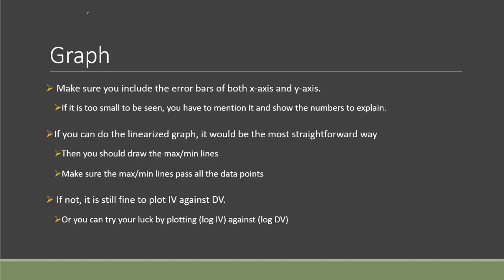The easiest part is actually plotting the graph. You just have to make sure that you must have included the error bar for both x-axis and y-axis. There are times where maybe the error bar is just too small to be seen because of the absolute uncertainty. It's relatively too small. So you have to mention this specifically. So don't just skip it. You have to really mention this in your passage.